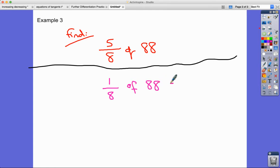Therefore, 5/8 of 88 is going to be 5 times bigger than that - 11 times 5, which gives us a final answer of 55.